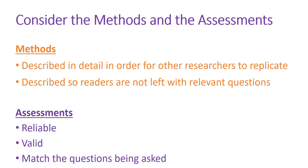You want to consider the methods and make sure that when you see the research, they've described in detail the method of the experiment so that other researchers can replicate it. From science, we know that's important — and the methods should be clearly described so you're not left with unanswered questions. Then think about the assessments used: were they reliable, did they give valid information, and did they match the question being explored? That's pretty much the information on the research base — read it with an eye toward whether it's quality research.